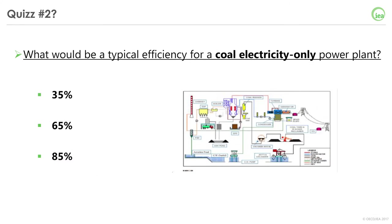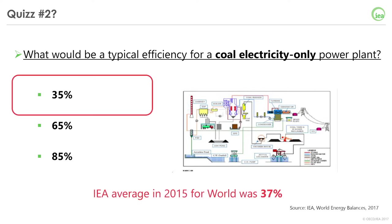Here is another question to illustrate the type of energy transformation we just discussed: what would be a typical efficiency for a coal electricity-only power plant — 35%, 65%, or 85%? The correct answer is 35%. Typically, coal power plants generating electricity-only have a rather low efficiency, usually below the 40% bar. In our latest World Energy Balances data, the computed efficiency of coal electricity-only plants for the whole world is 37% for 2015.